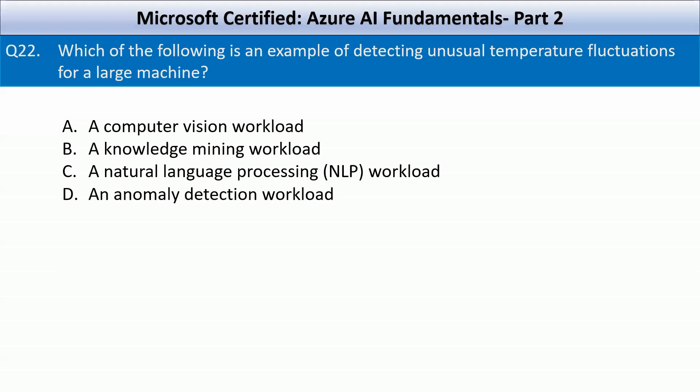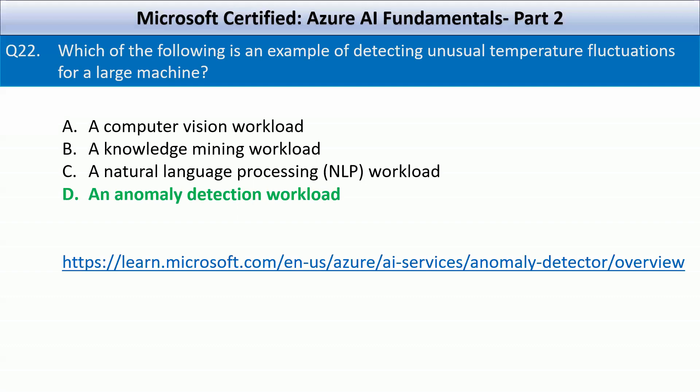Which of the following is an example of detecting unusual temperature fluctuations for a large machine? Options are a computer vision workload, a knowledge mining workload, a natural language processing workload, or an anomaly detection workload. Detecting unusual temperature fluctuations involves identifying deviations from normal behavior — a classic use case of anomaly detection. Azure AI provides services like Anomaly Detector, which analyzes time series data such as temperature readings and detects anomalies based on historical trends.